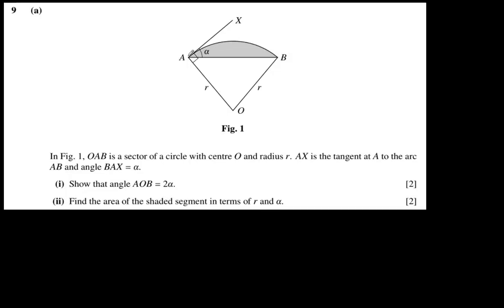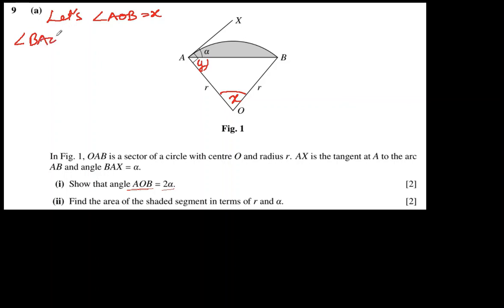In this question, they have given a sector AOB. There is a tangent on the circular part of the sector AX, and it is making angle alpha with one of the chords that joins A and B. In part A, they are saying show that angle AOB is equal to 2 alpha. Let's assume angle AOB equal to X, which we have to prove is equal to 2 alpha.